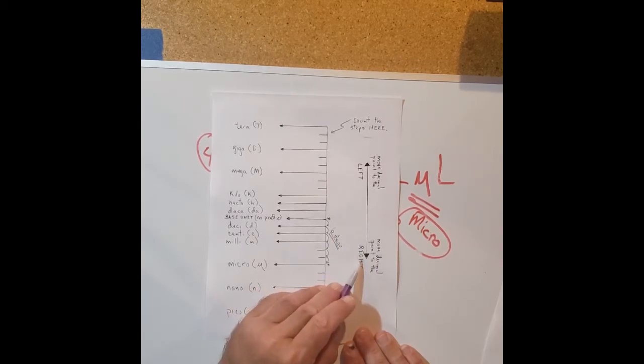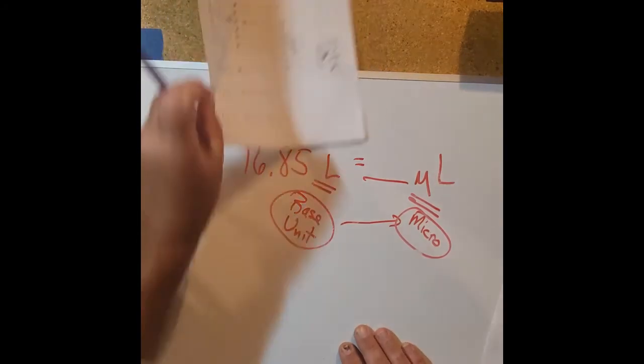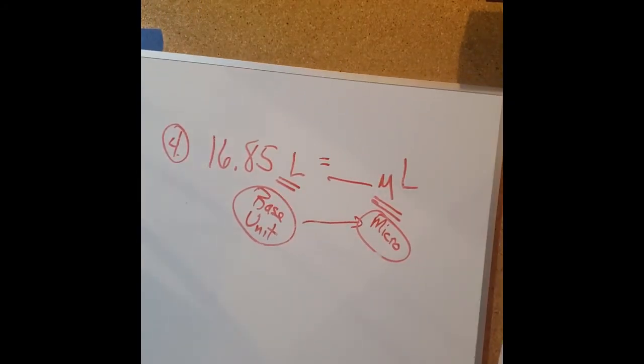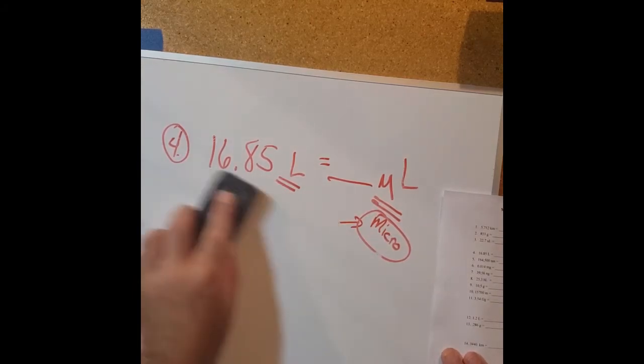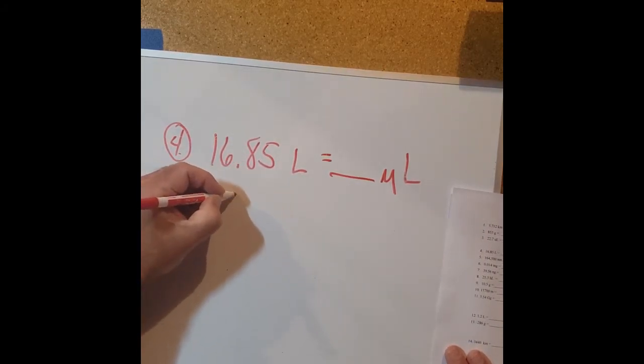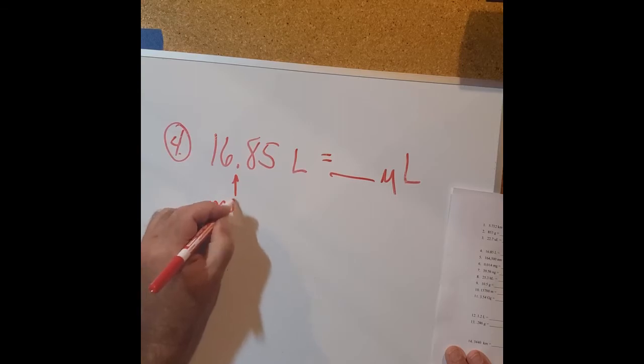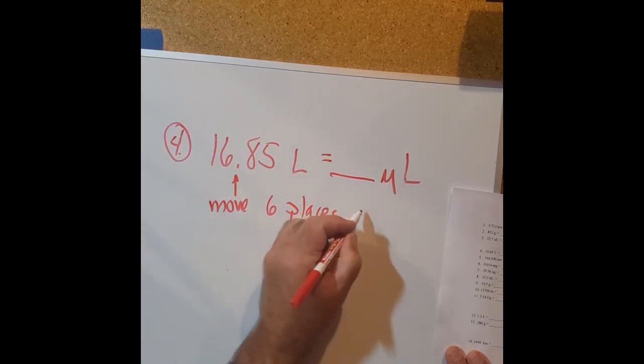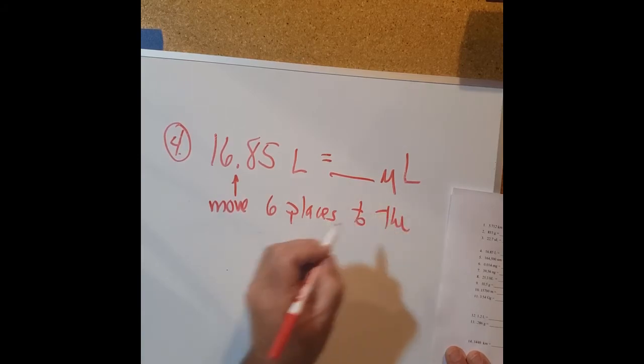All right, so let's go back here. Let me get rid of this real quick. All right, here's the decimal point right here - move six places to the right.